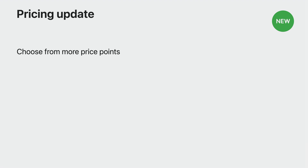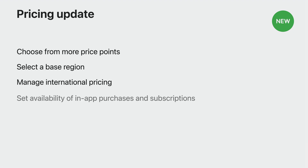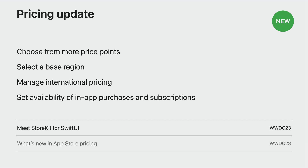This update allows you to choose from 900 price points to give you flexibility on the pricing of your app. Set a base region, which is the ability to choose one region to automatically generate prices across other regions and currencies. Manage international pricing, which allows the App Store to adjust your prices as currencies or taxes change, or manage them manually on your own. And set the availability of in-app purchases and subscriptions by region. To begin implementing StoreKit for SwiftUI, visit Meet StoreKit for SwiftUI. To go in-depth on this year's pricing changes and new pricing endpoints in the App Store Connect API, visit What's New in App Store Pricing.